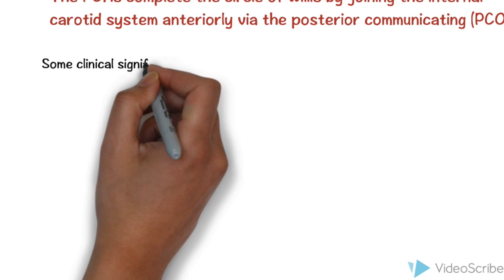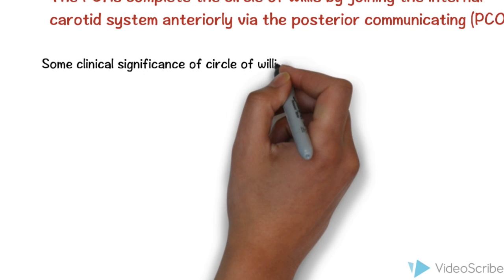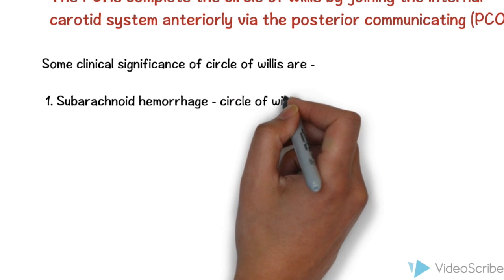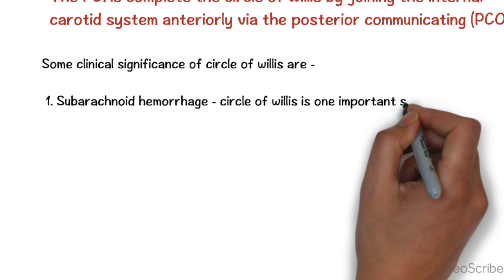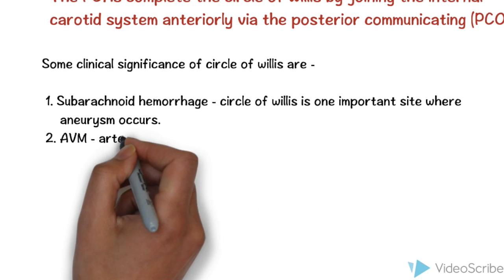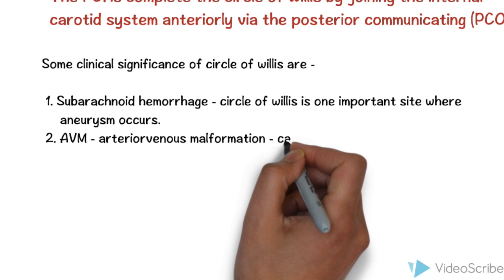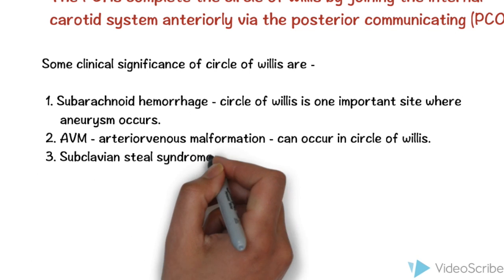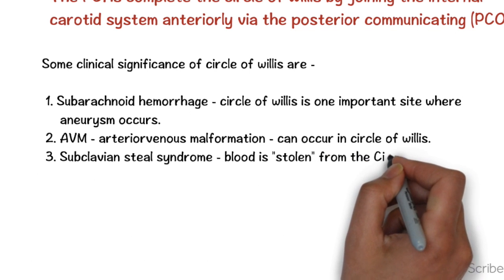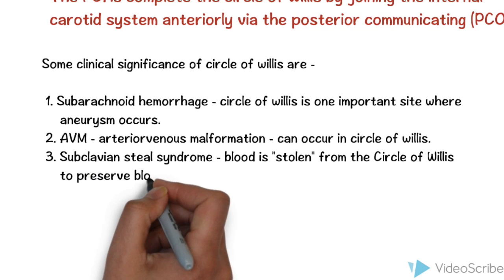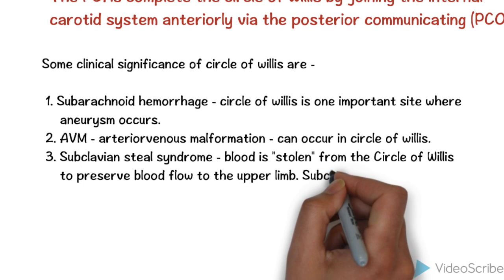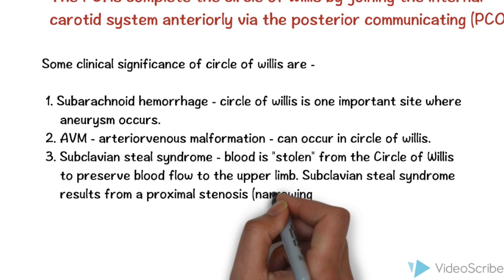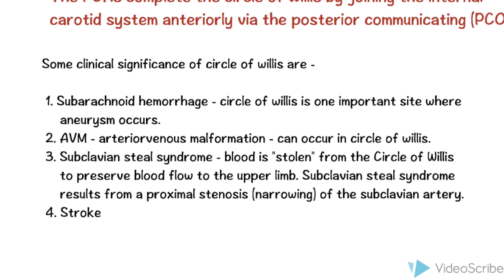Some clinical significance of the Circle of Willis: subarachnoid hemorrhage — the Circle of Willis is one of the important sites where aneurysms occur; arteriovenous malformation; subclavian steal syndrome — blood is stolen from the Circle of Willis to preserve blood flow to the upper limb, resulting from proximal stenosis of the subclavian artery; and stroke.